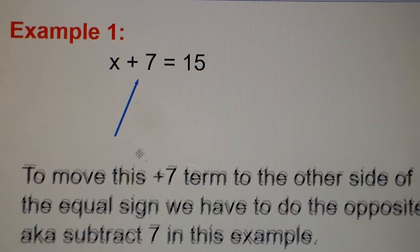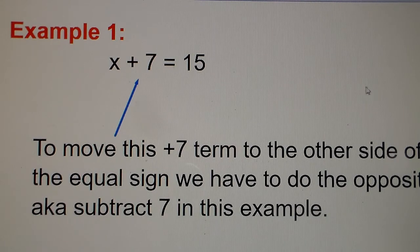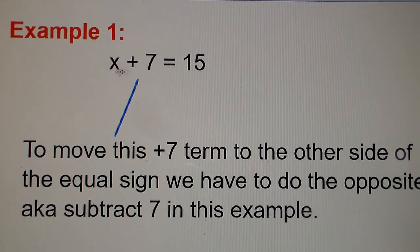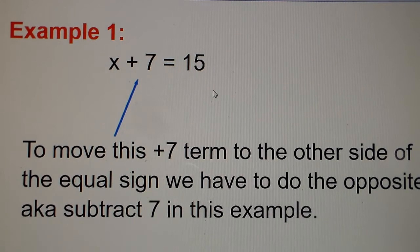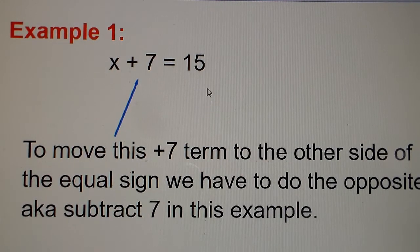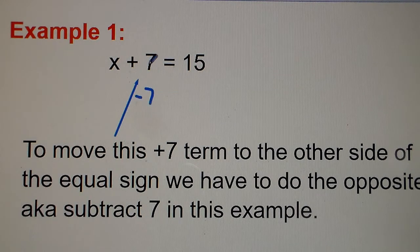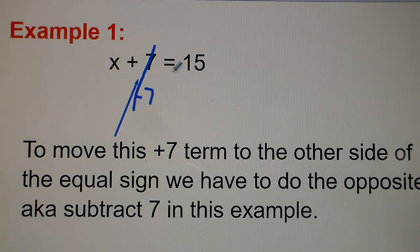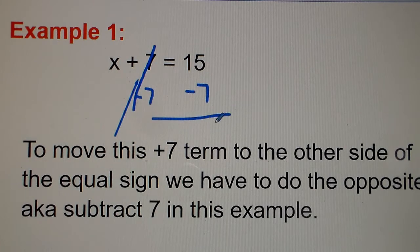Here's how this looks in math: x plus 7 is equal to 15. Our goal is to get x all by itself. To do this, we move that positive 7 to the other side of the equal sign — the opposite of positive 7 is minus 7. Subtracting 7 from the left side, they cancel each other out. We also subtract 7 from the right side: 15 minus 7 equals 8. So x equals 8.